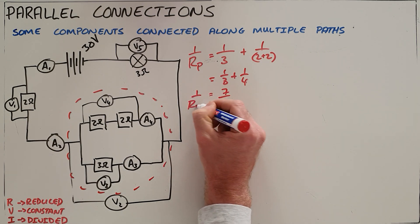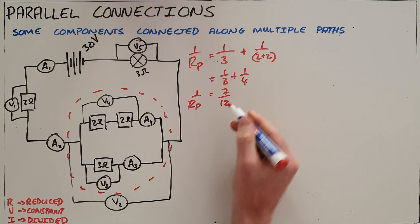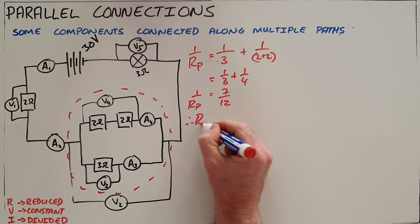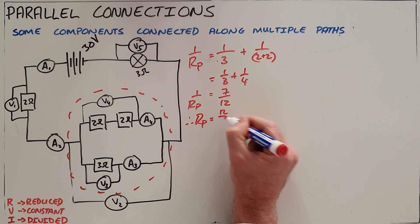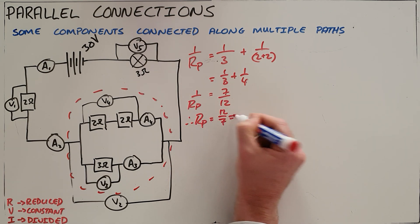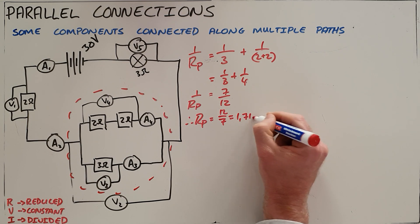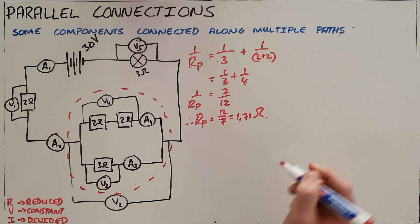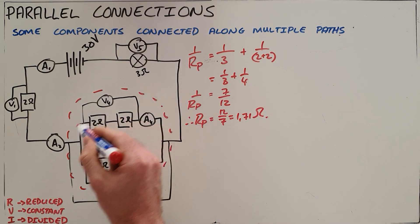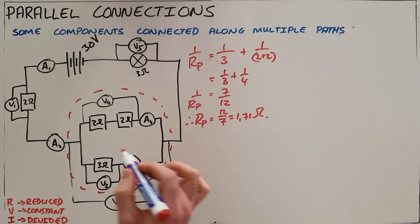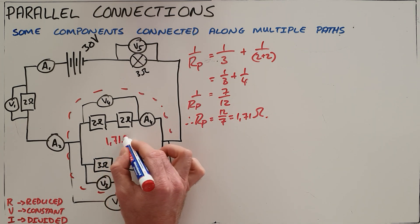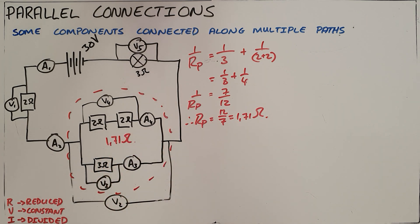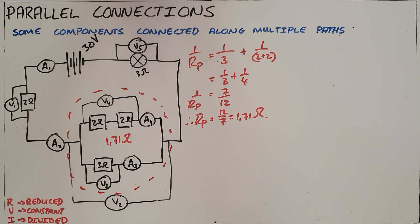It's important to note that 1 over RP equals 7 over 12, and therefore RP is equal to 12 over 7, which is 1.71 Ohms. This means the entire parallel connection is equivalent to a single 1.71 Ohm resistor connected in series.